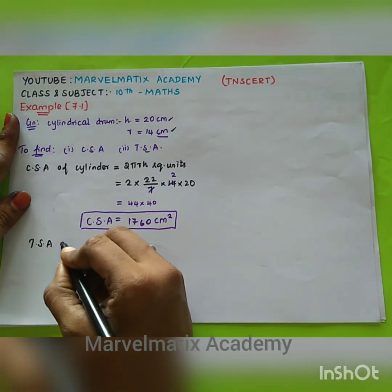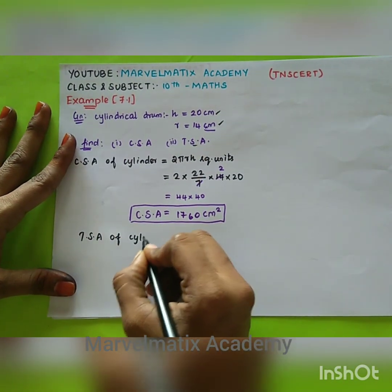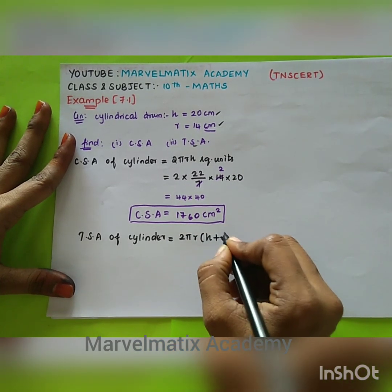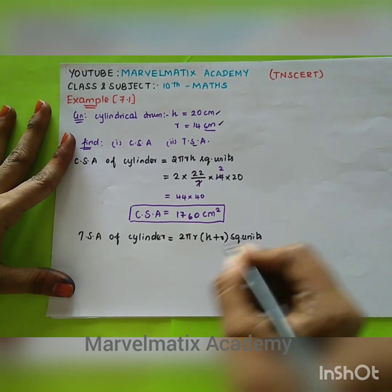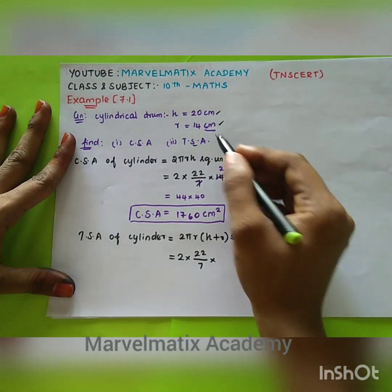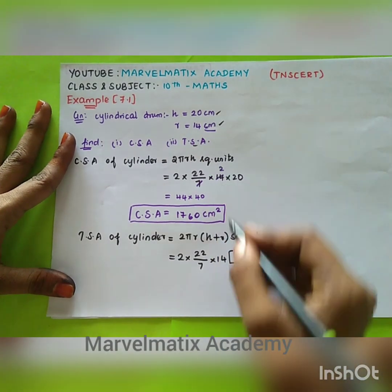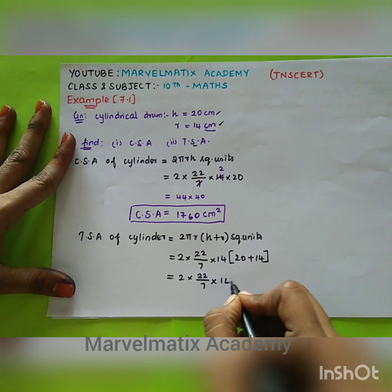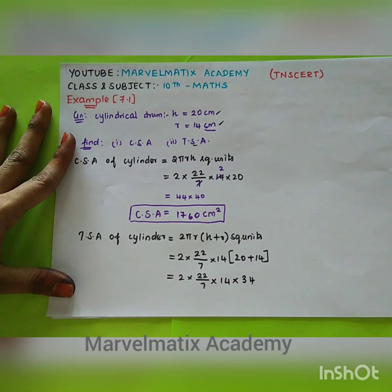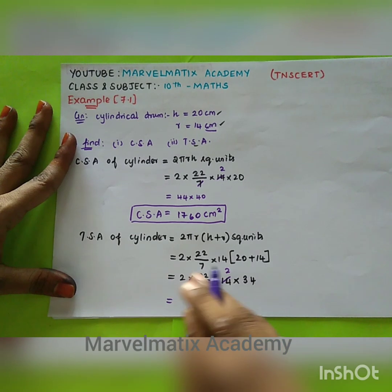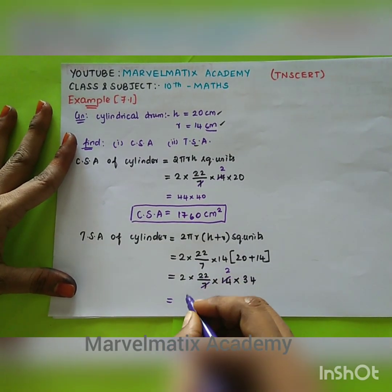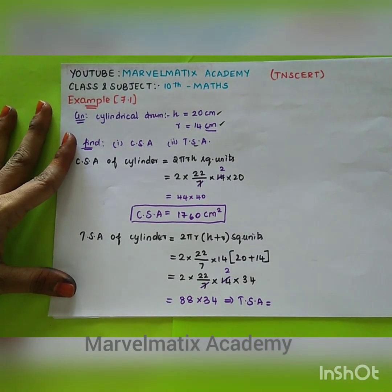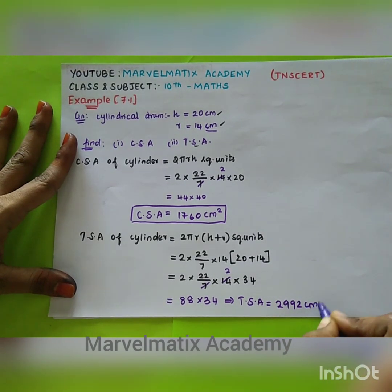TSA of cylinder. TSA formula is 2πr(h + r) square units. Pi value is 22 by 7, r is 14, h is 20, so h + r = 34. So 2 × (22/7) × 14 × 34. Strike out 7 and 14 — answer is 2 × 22 × 4 = 88 × 34. TSA equals 2992 cm².